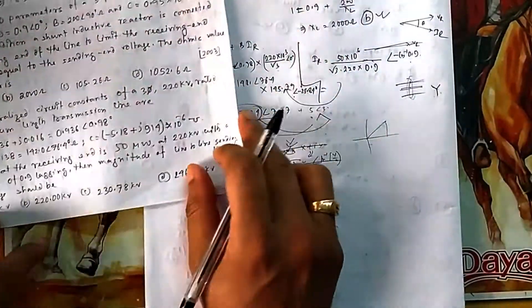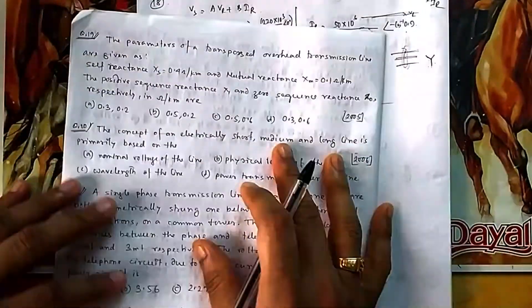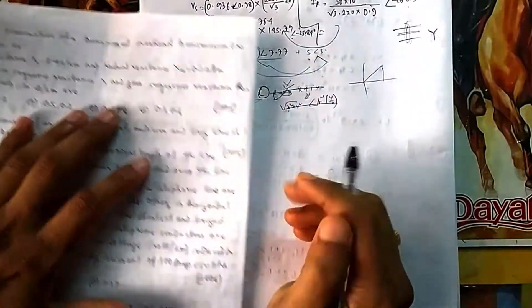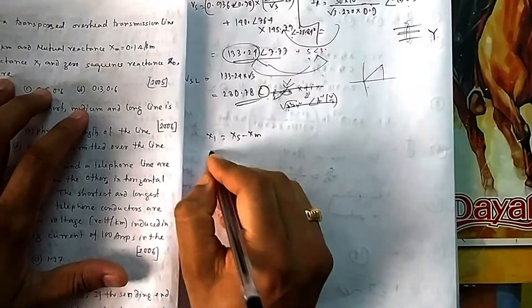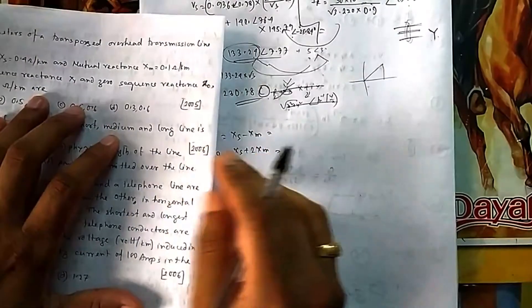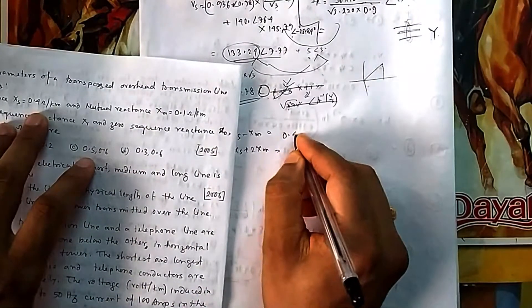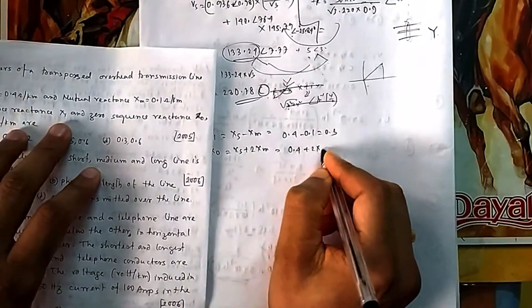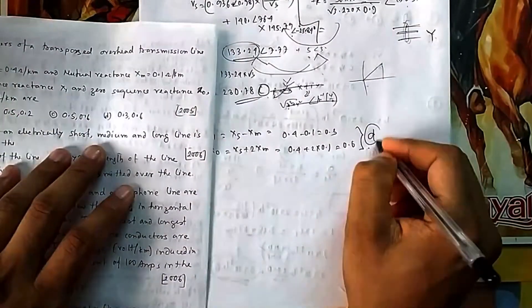Question 19: The parameters of a transposed overhead transmission line are given - Xs, Ms, Xm. You know sequence networks for transmission lines. What is positive sequence? It is Xs - Xm. What is zero sequence? It is Xs + 2Xm. These are the formulas for a properly symmetrical transposed transmission line. So it will be 0.4 - 0.1 = 0.3, and 0.4 + 2(0.1) = 0.6. So 0.3 and 0.6, that is option D.